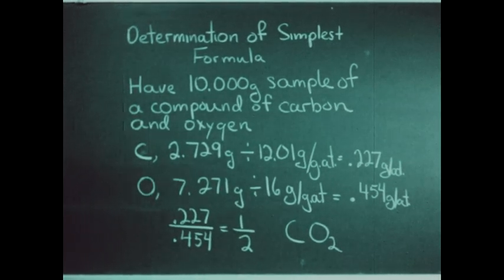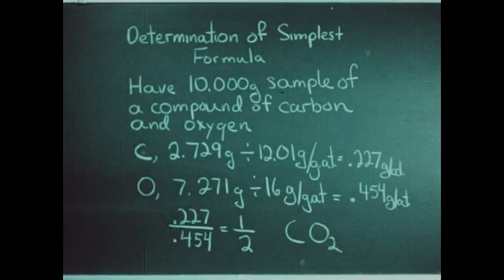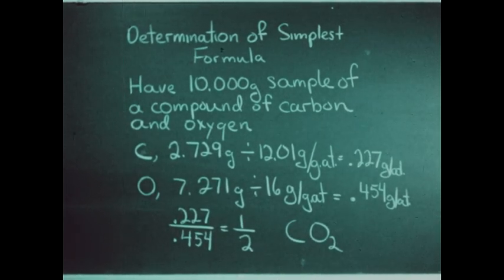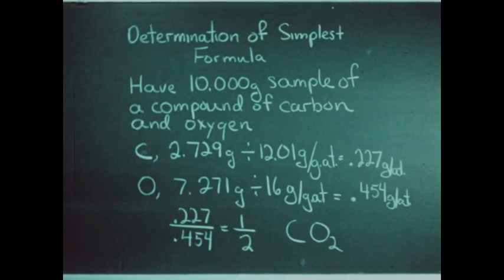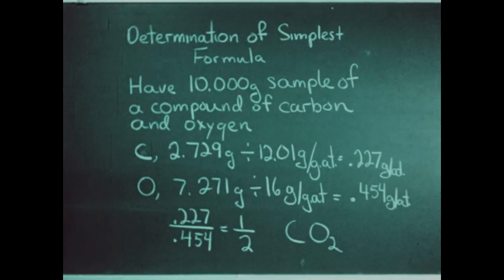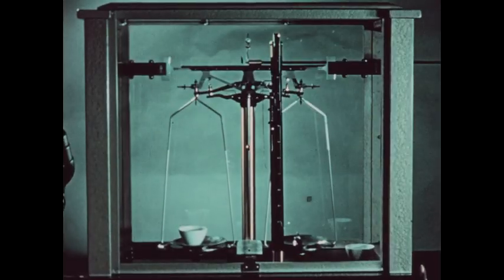In this film, we're going to examine the compound formed by copper and sulfur. We're going to determine the combining weight ratio experimentally, consult our atomic weight chart to get the atomic weights of these two elements, and then perform a similar calculation to determine the simplest formula of the compound of copper and sulfur. Bear in mind that the two required items are the weight ratio in which the elements combine and the atomic weight of the elements.